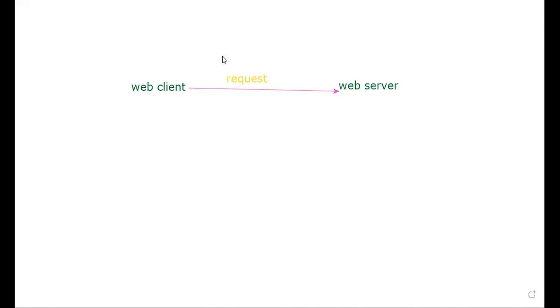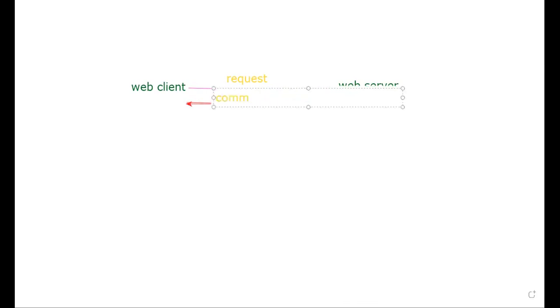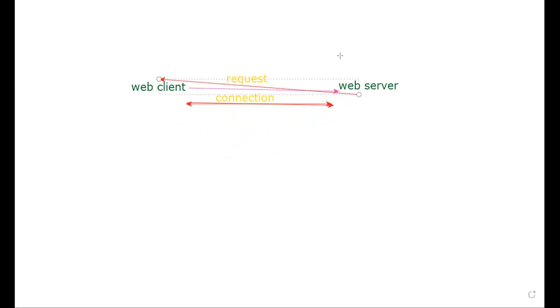Then a two-way connection is established. The communication path is opened, enabling communication between the browser and the server. This is the connection phase. Then the third channel is created — from the web server back to the web client — which is the response. So the three things are: request, connection, and response.